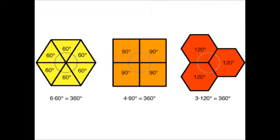At each vertex in a tessellation, the angles making up that vertex must total 360 degrees. If they totaled more or less than 360 degrees, there would be overlap or gaps between polygons.